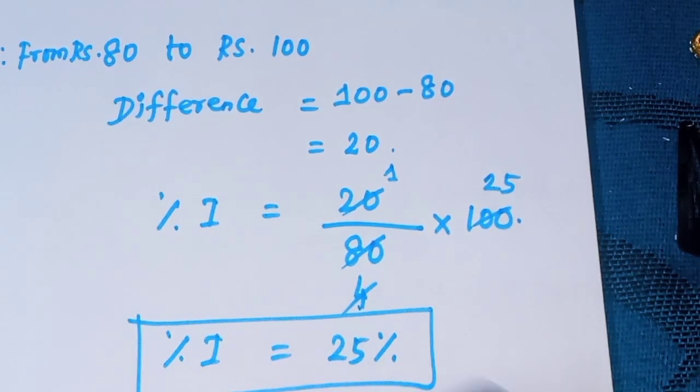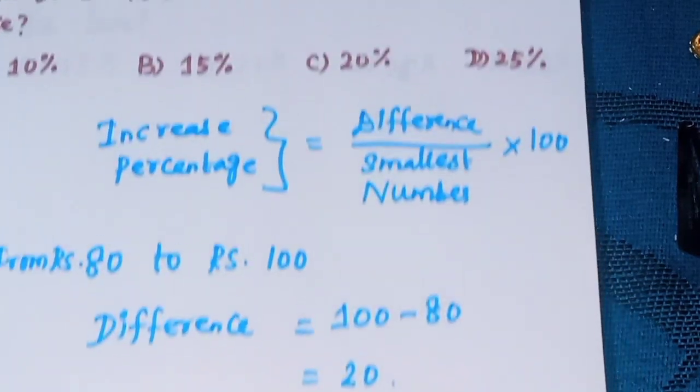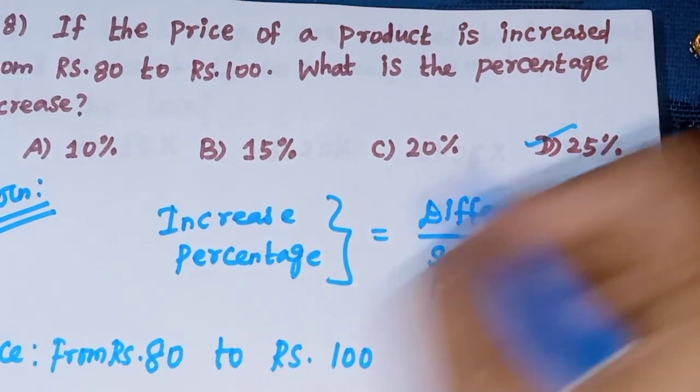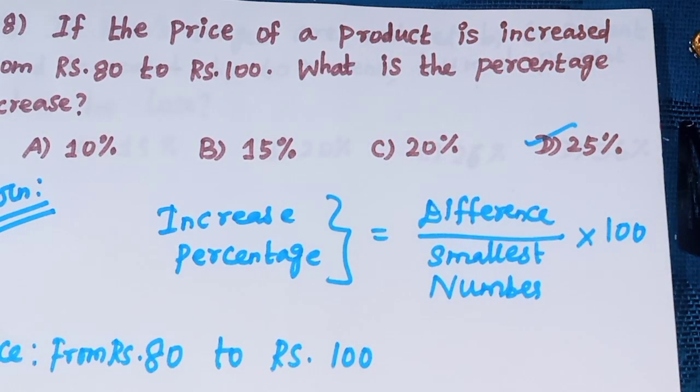This is the final answer. The answer is option D, 25%. Thank you. Harimax channel subscribe. Thank you.